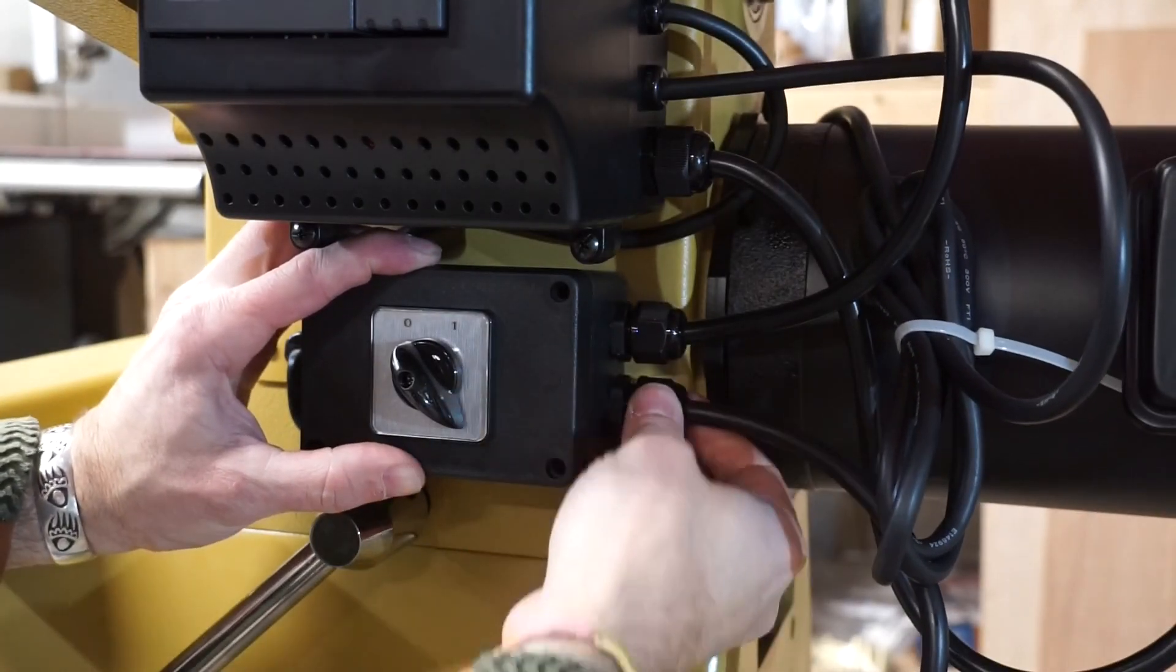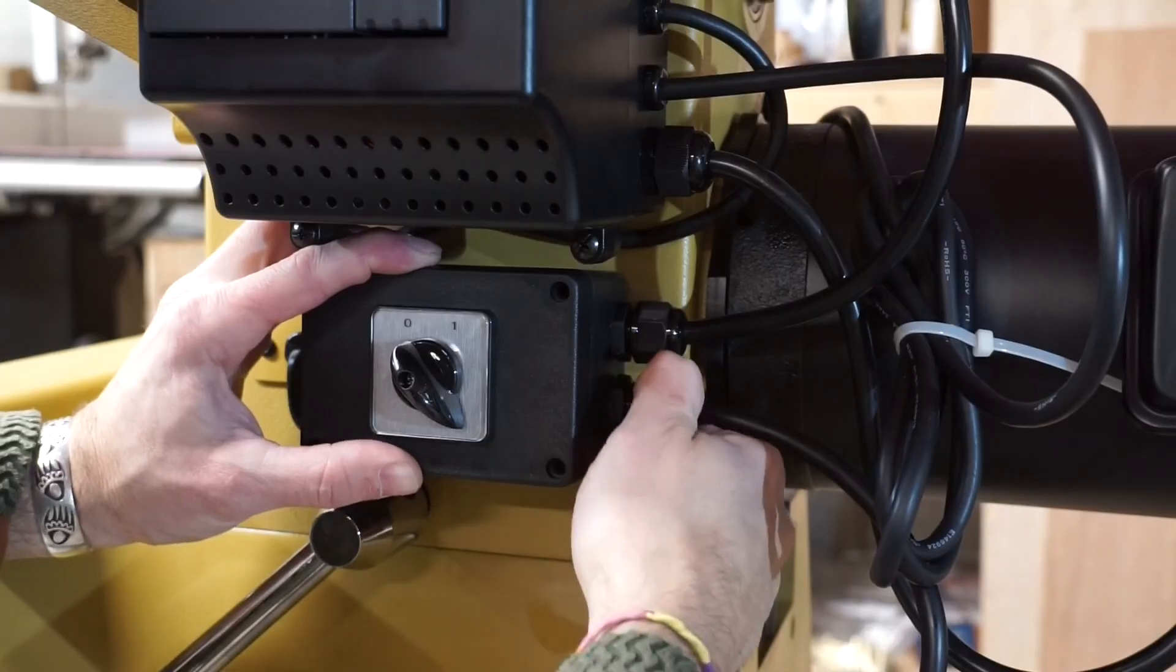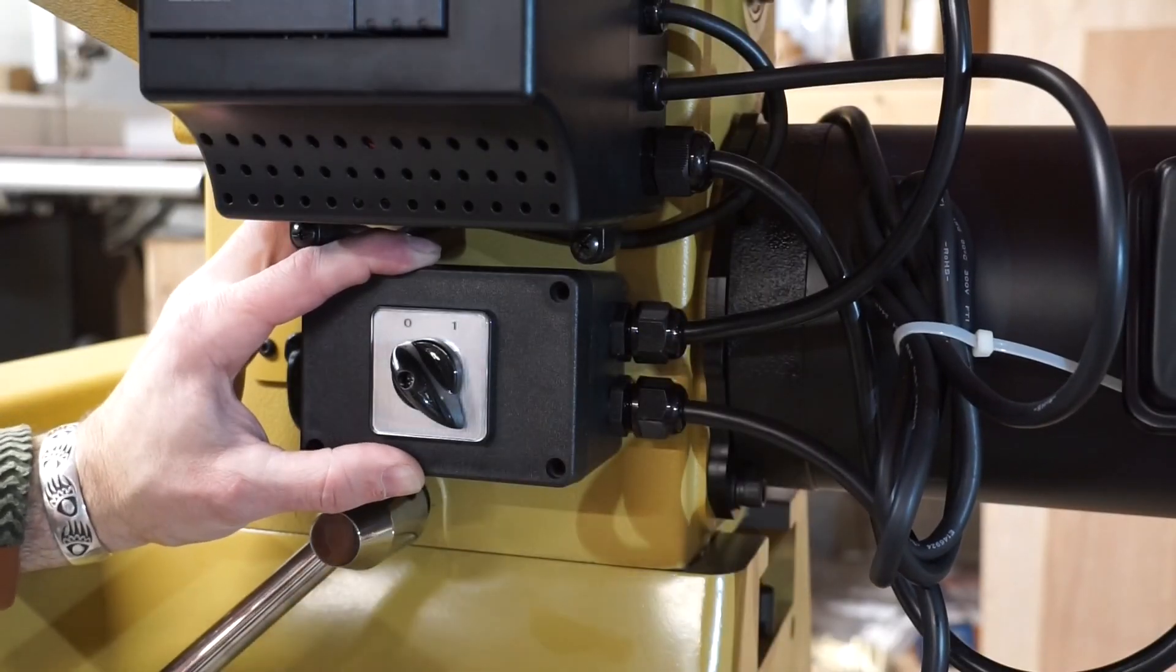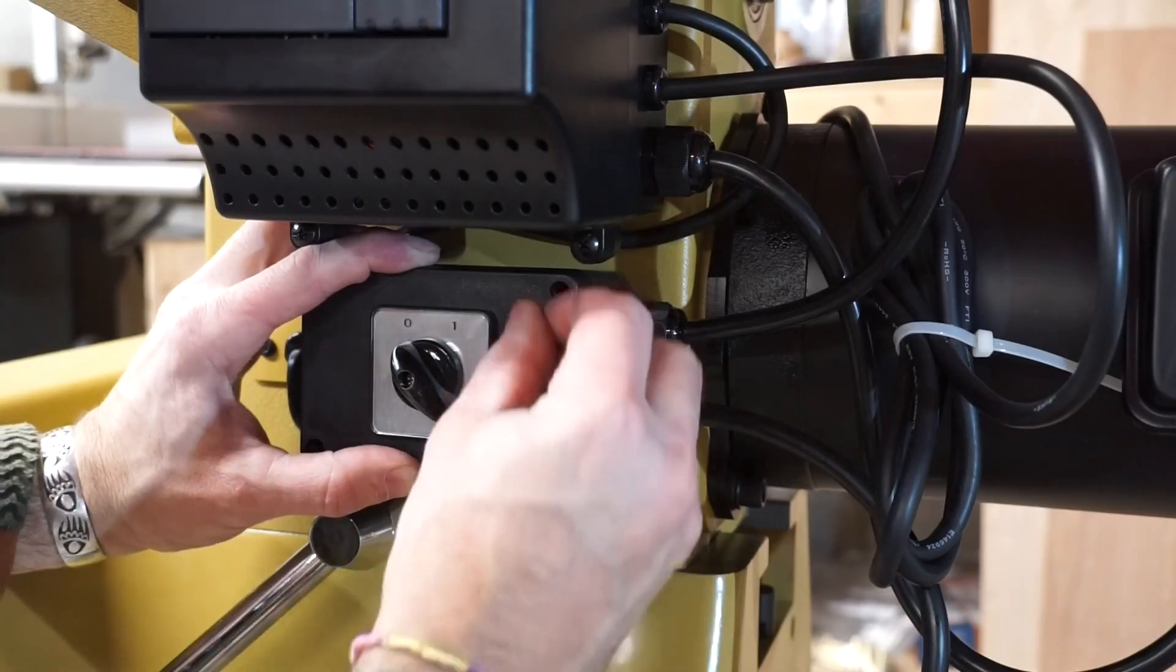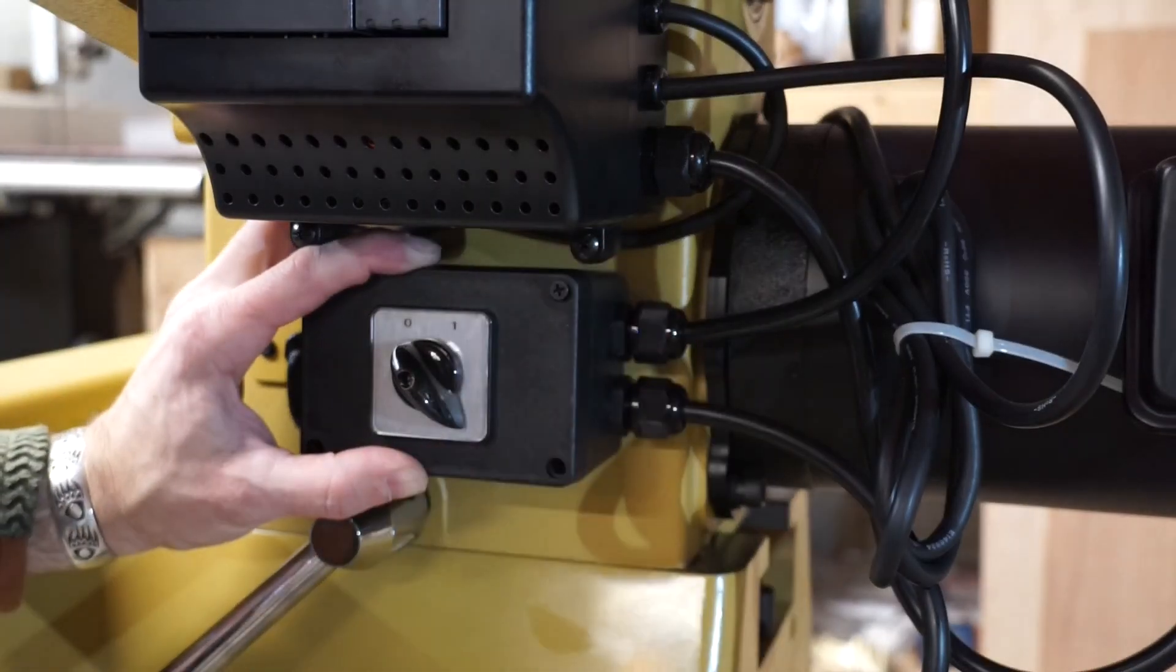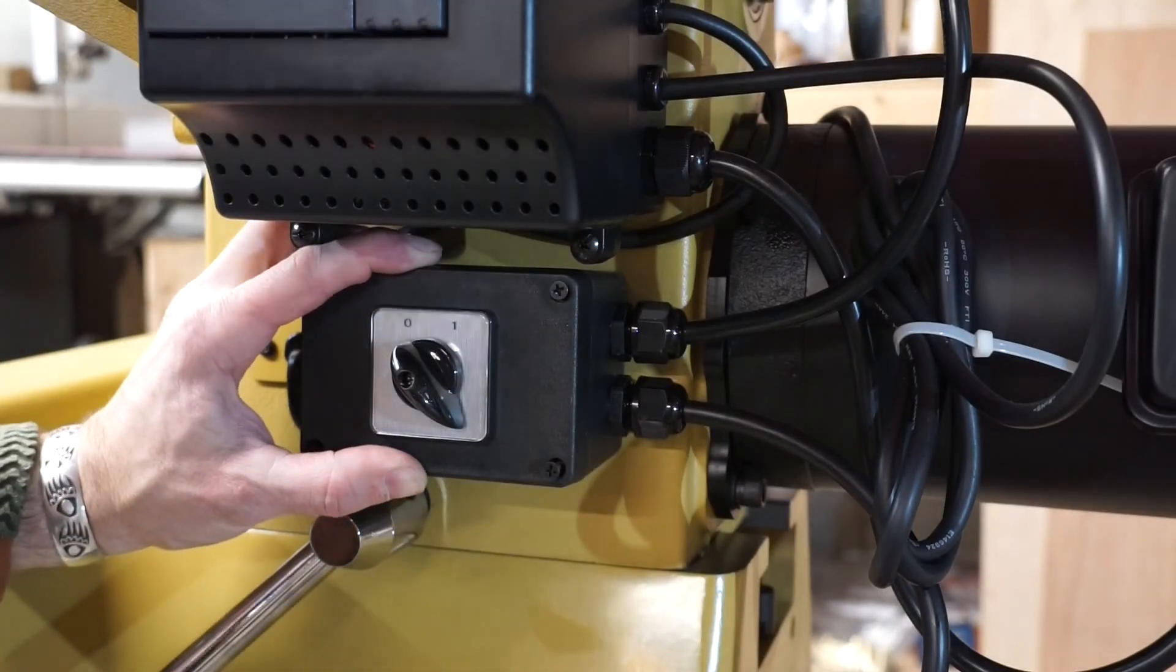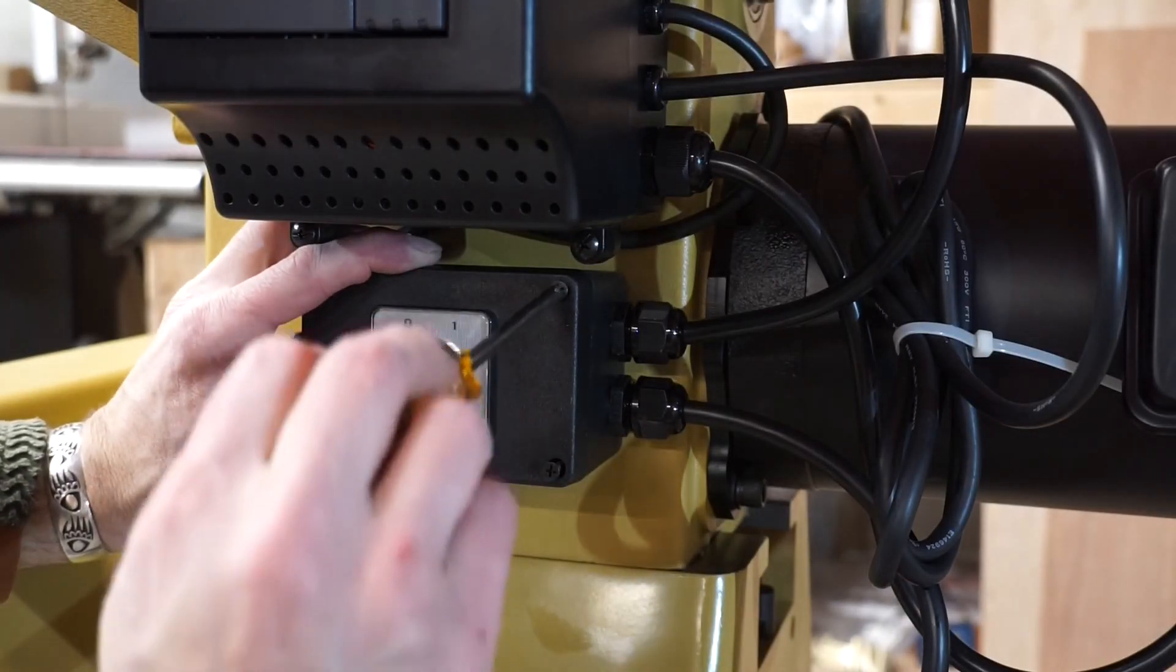I'm going to tighten the nut here on this gland to make sure that it secures the cable. And then I'm just going to put the four Phillips head screws back in place, tighten everything up, and then I'll show you how we're going to handle the other end of the power cable.